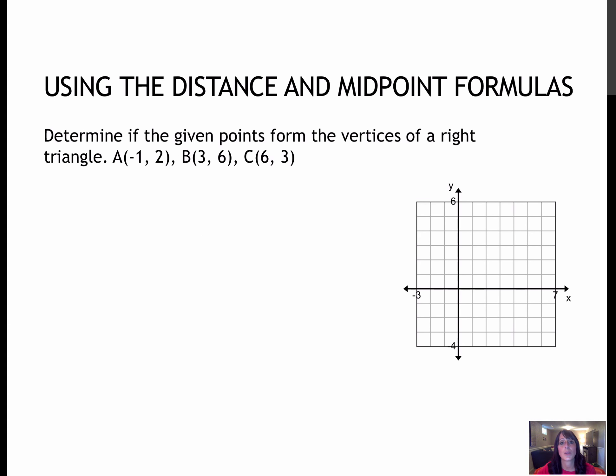This one asks us to determine if the points form the vertices of a right triangle. There's going to be quite a bit of work involved in this question. So A is at (-1, 2), B is at (3, 6), and C is at (6, 3).